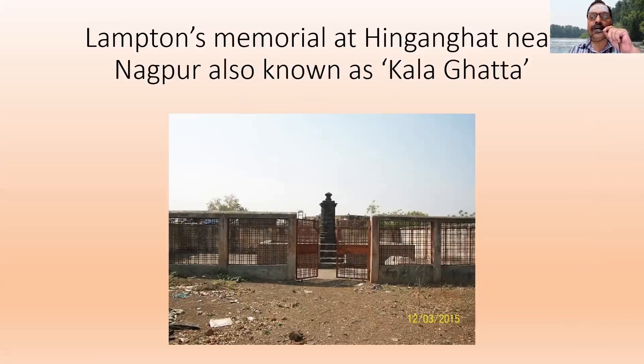After Lambton, George Everest took over, and after him many others were in charge of the survey. They found out the height of the tallest peak in the world and named it after their officer George Everest — that is why it is called Mount Everest. The maps we see and study in our school geography books and atlases are all because of the Great Trigonometrical Survey, also called the Great Geodetic Survey, which started from Chennai.